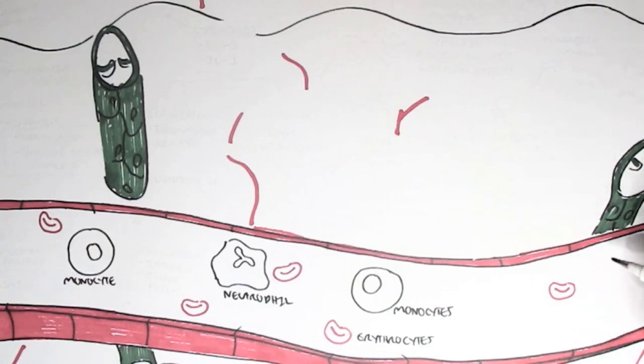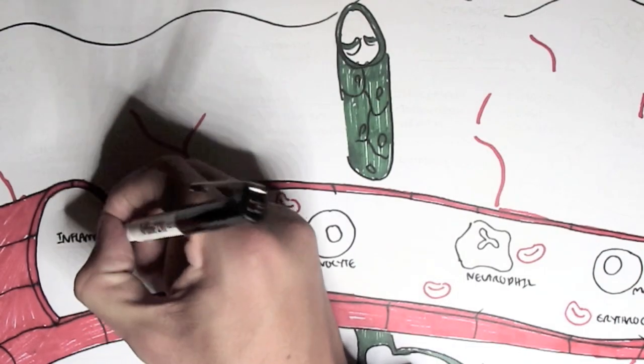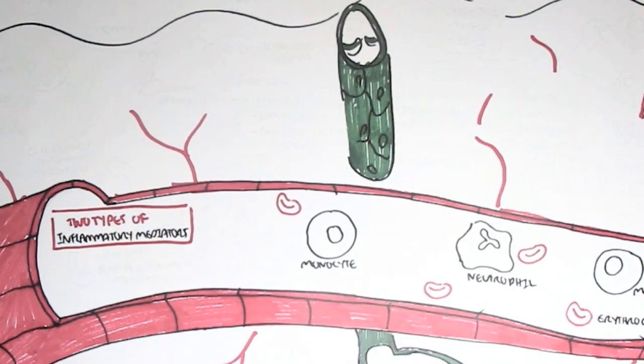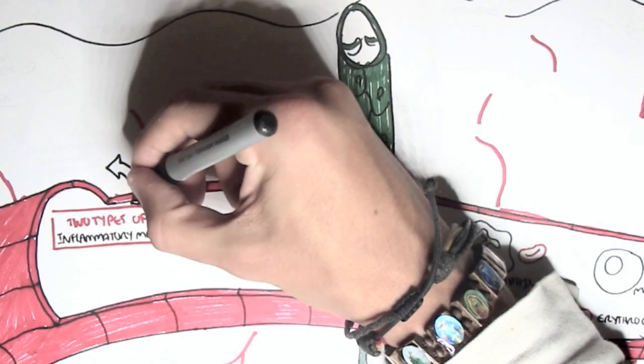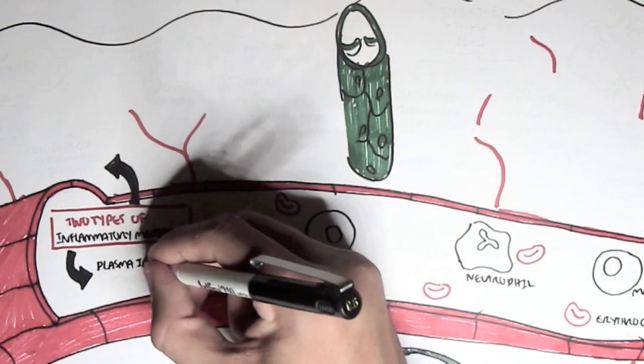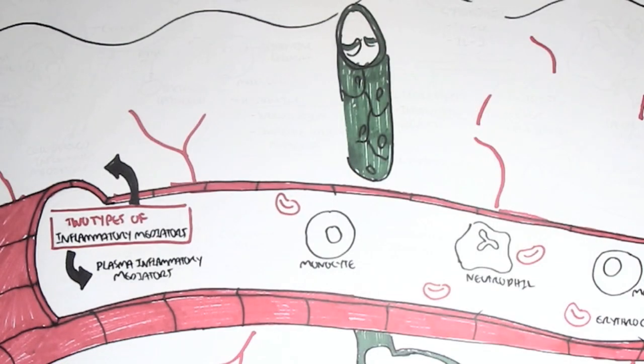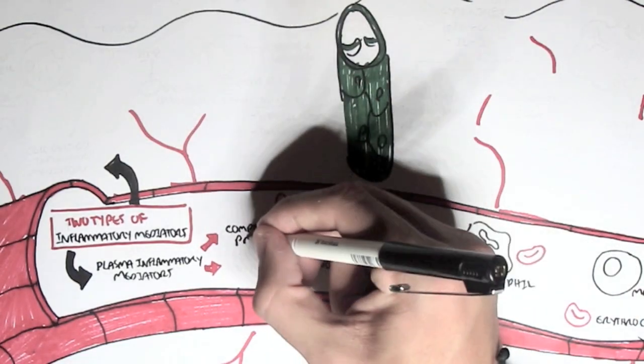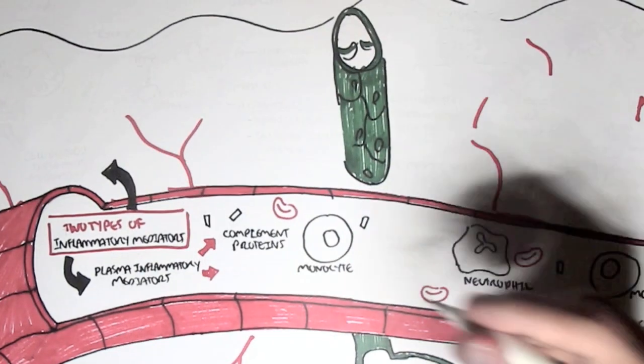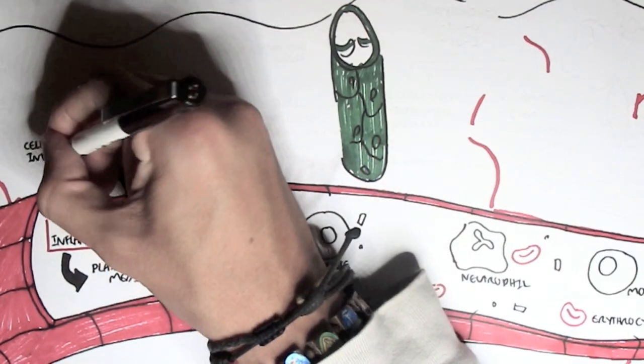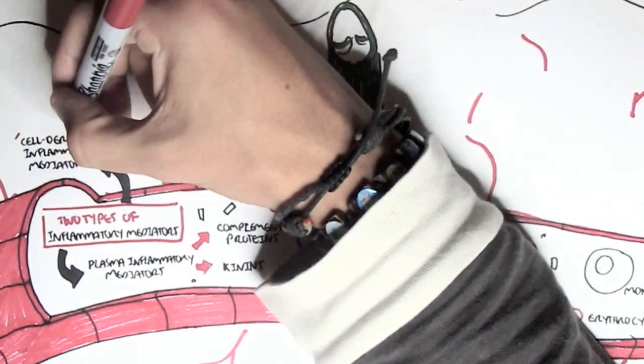And because we're talking about inflammation, we have also circulating in the blood vessel inflammatory mediators. It is important to know that there are two types of inflammatory mediators in general. The two types are the plasma inflammatory mediators, which are the circulating inflammatory mediators. These are the complement proteins and the kinins. They are made by the liver and they circulate with the blood vessel and are activated upon inflammation. The other type of inflammatory mediator is a cell-derived inflammatory mediator, meaning that they come from cells.